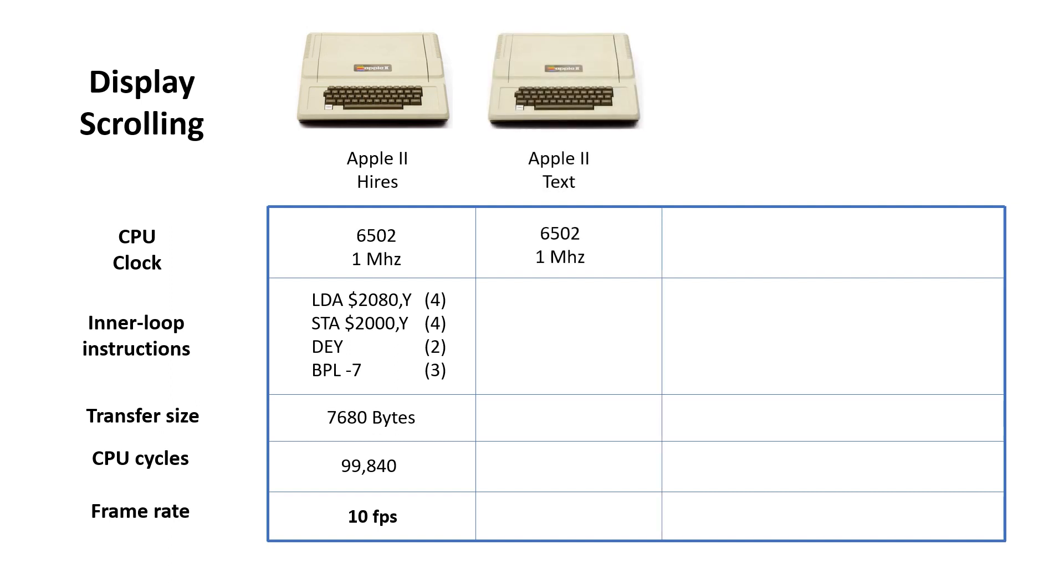If we add in a hardware character generator, we only need to transfer 960 bytes per frame. So the same code can run at about 80 frames a second, which means you could scroll an entire screen in about a quarter of a second. Much better.